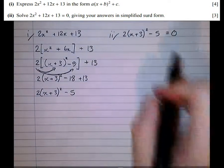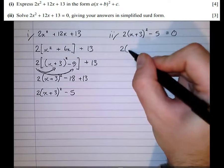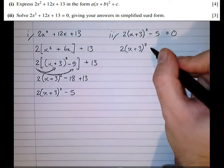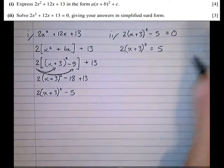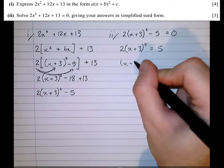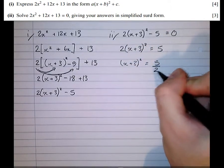Now the aim is to get all the terms over to the other side. 2(x + 3)² = 5 by adding 5. Then divide by 2. (x + 3)² = 5/2.